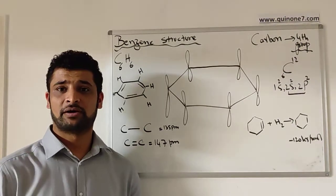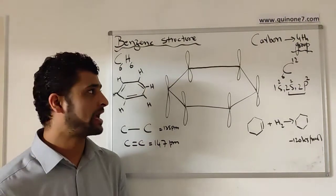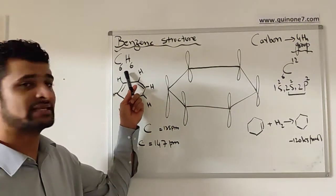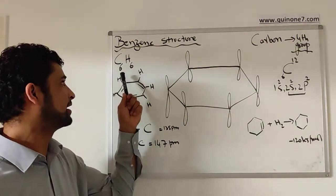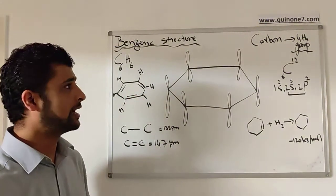Hi, today we're going to learn about the structure of benzene. Benzene molecular formula is C6H6. There are six carbon atoms and six hydrogen atoms.